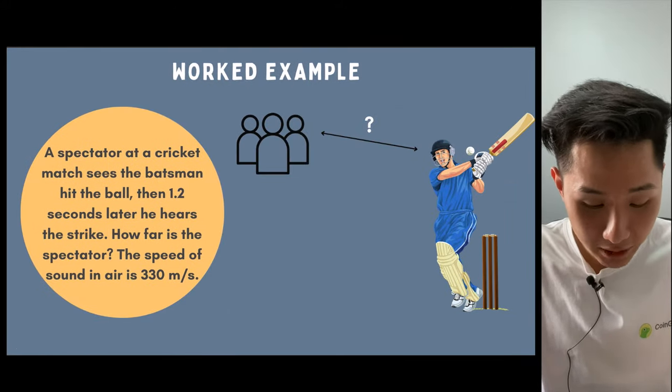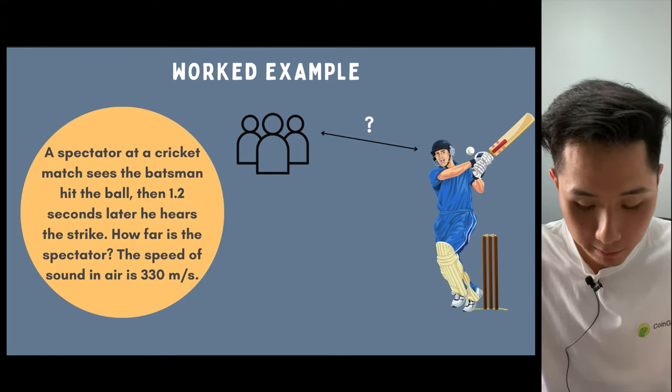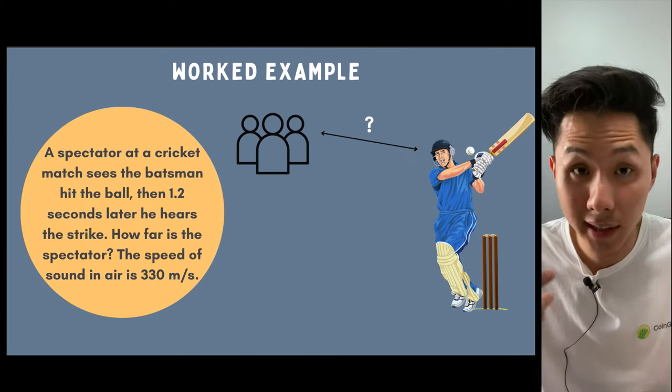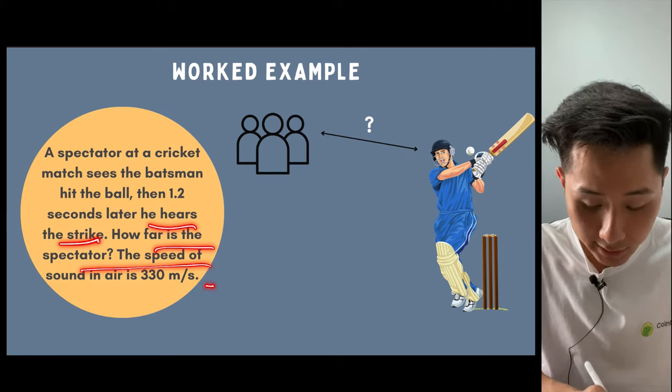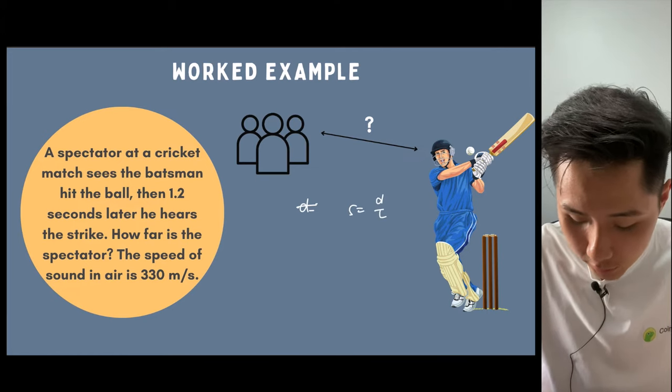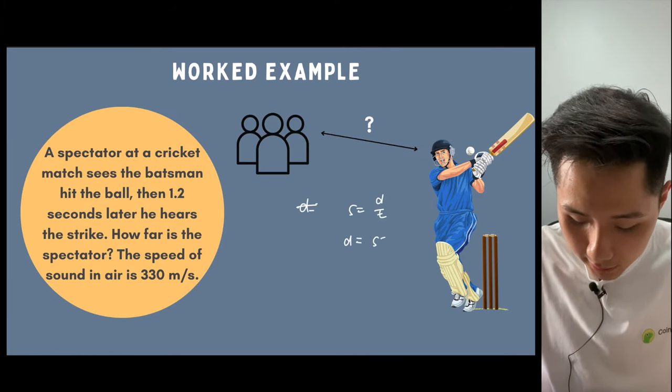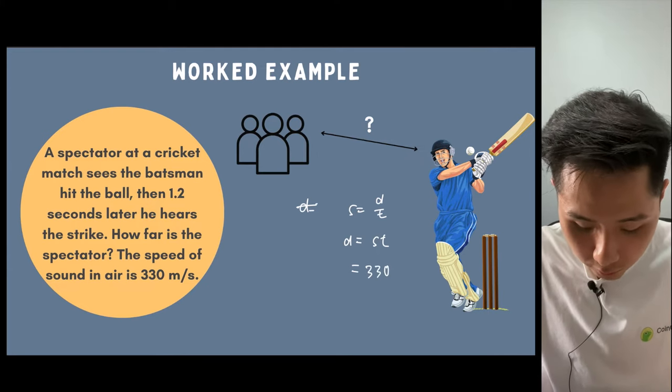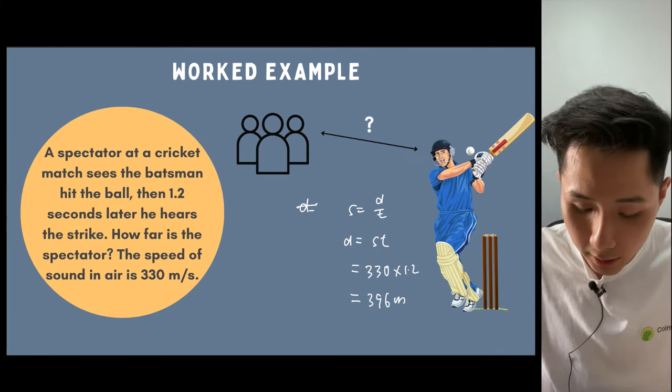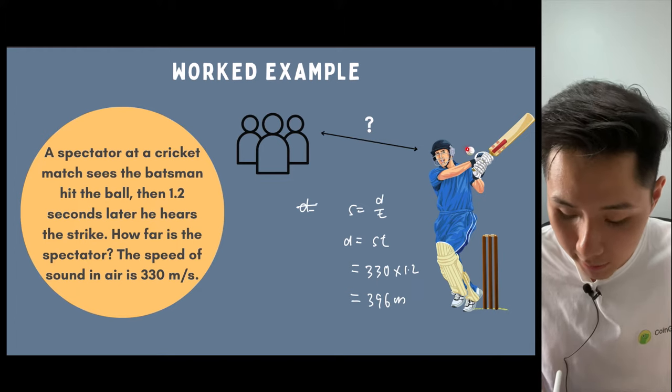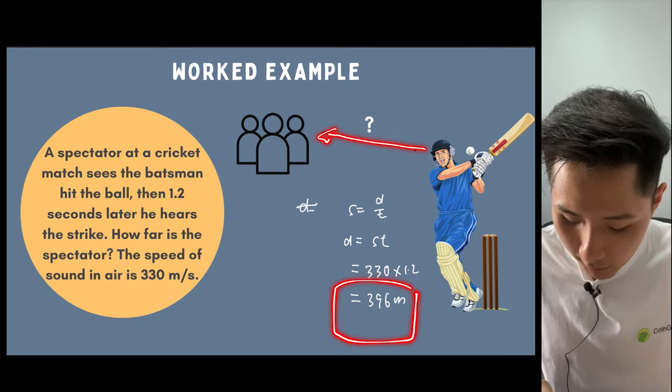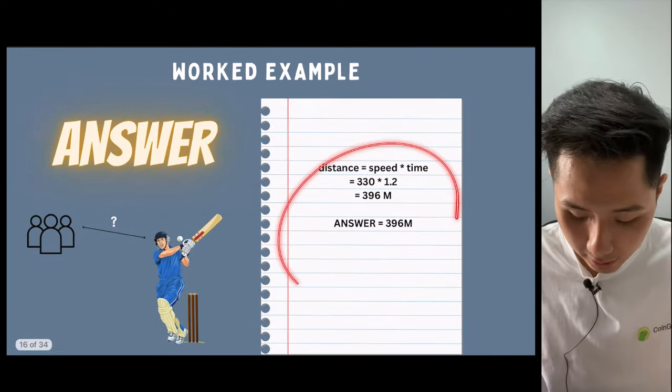Next up, there's another example here. A spectator at a cricket match sees the batsman hit the ball, and then 1.2 seconds later, he hears the strike. How far is the spectator? Again, we can use speed equals distance over time. We can make distance the subject, speed times time. We can simply multiply 330 times 1.2, which will get 396 meters. In this example, we don't divide it by 2 because the sound travels only one way from the batsman to the spectator. So the answer is 396 meters.